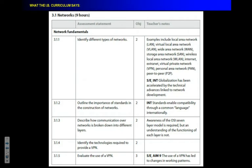Importance of standards: standards include a common protocol system with networks, so they can always talk the same language. There's something called the OSI seven-layer model — you don't need to know too much about that other than it exists, but basically it describes how communication over networks is done. Then there are technologies required for a VPN.